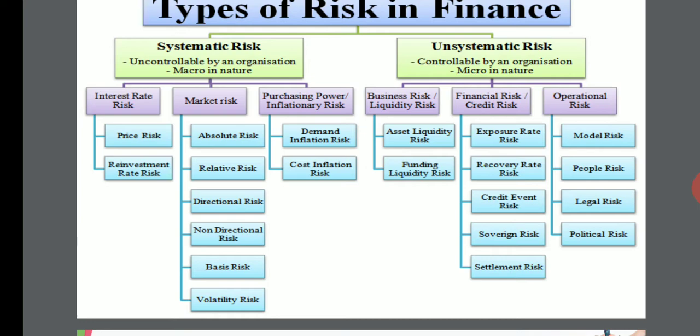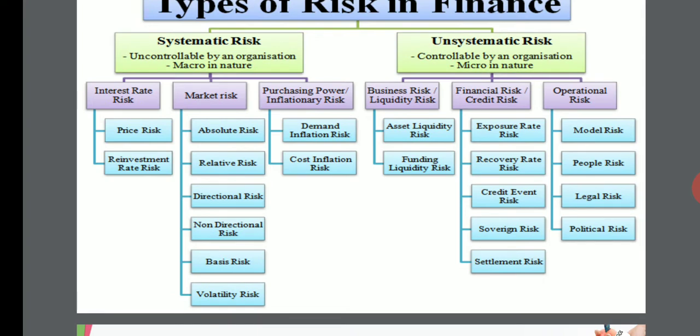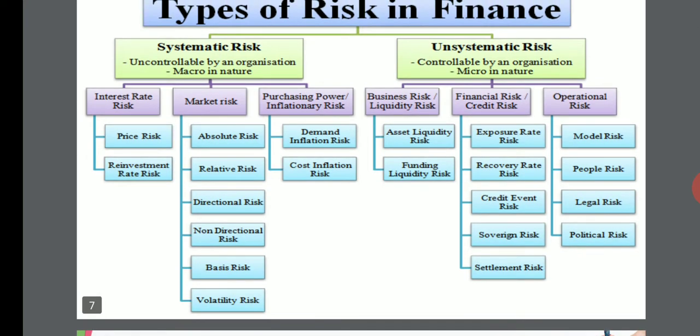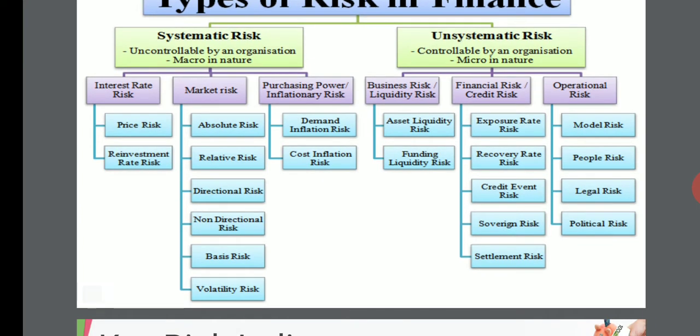Purchasing power or inflationary risk is created due to lowering of purchasing power or due to inflation. There are two types: demand inflation risk and cost inflation risk — corresponding to demand pull and cost push inflation. When demand increases, demand-pull inflation is caused; when costs increase, cost-push inflation occurs. Both are factors of systematic risk.